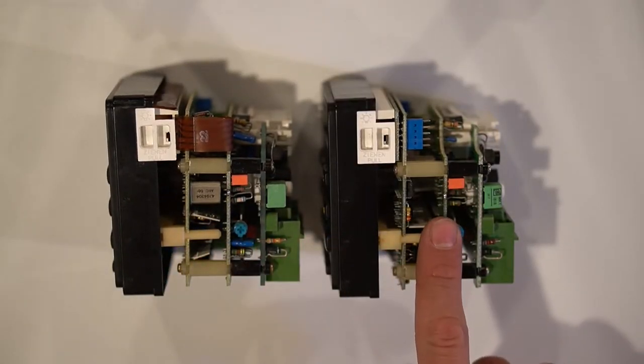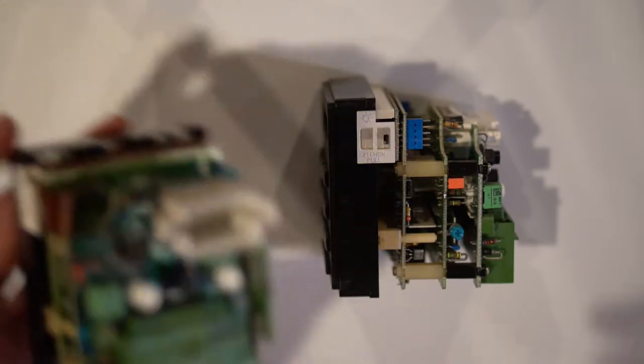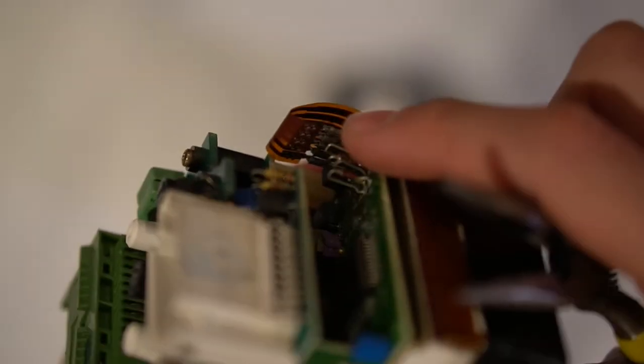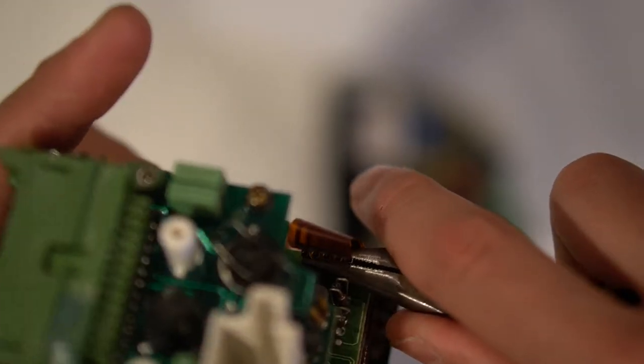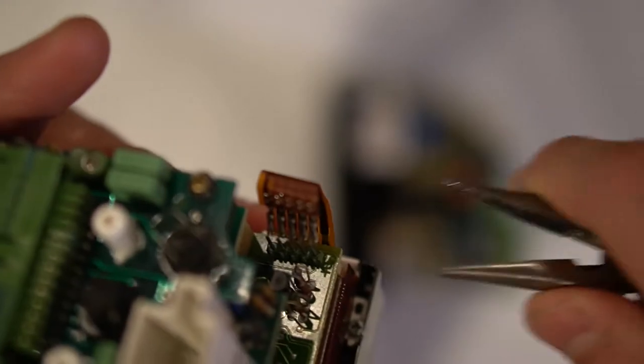There is technically an early model and late model design. The only difference in this whole process between the two is the early model uses a ribbon cable to connect the LCD to the main electronics. Take your needle nose pliers and gently remove the ribbon cable from the pins.